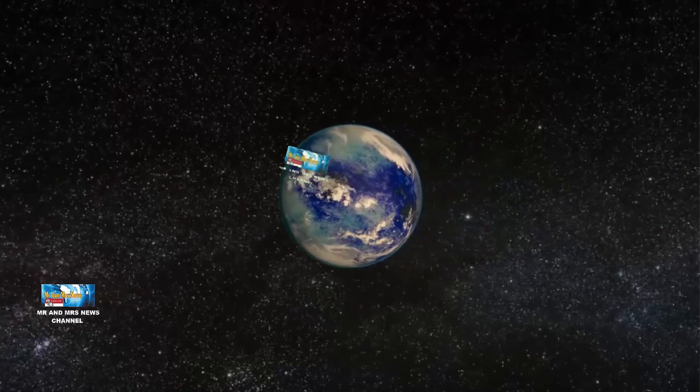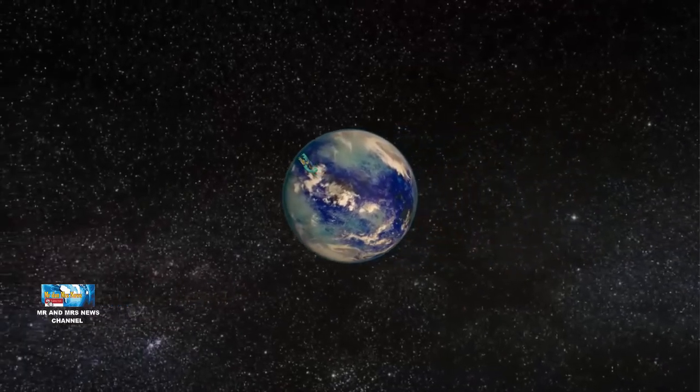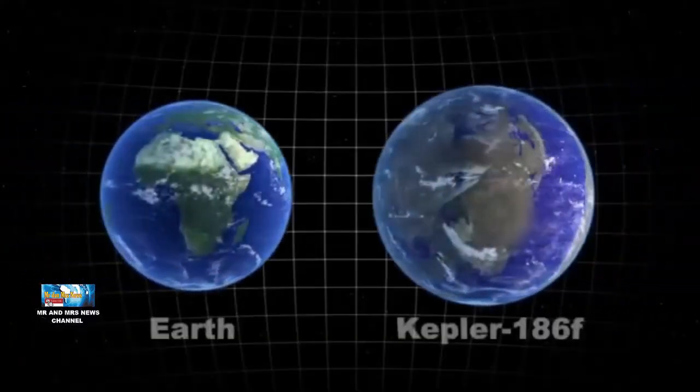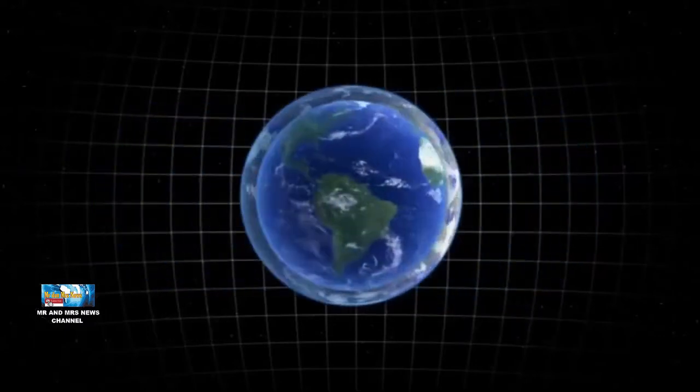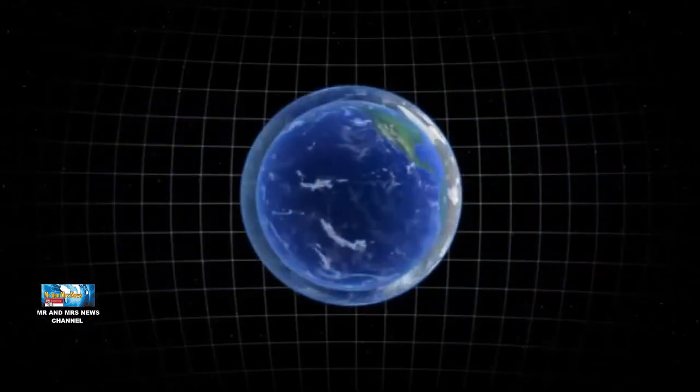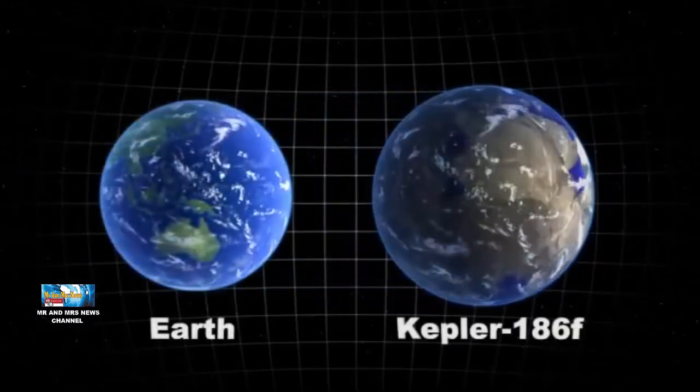Sementara itu, planet Kepler-186F membutuhkan sekitar 130 hari untuk mengorbit bintang katai merahnya. Empat planet lain mengorbit bintang bagaimanapun tidak berada di zona Goldilocks.